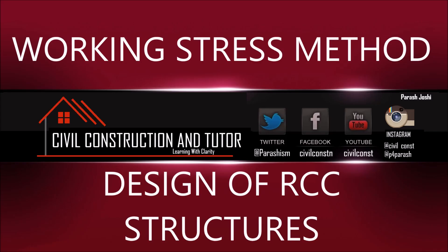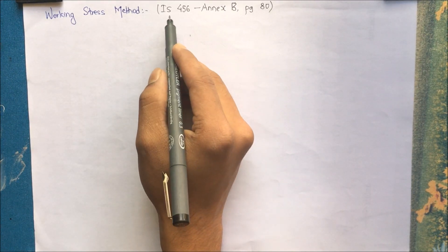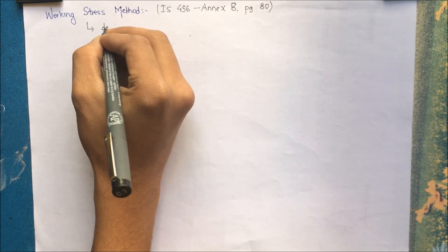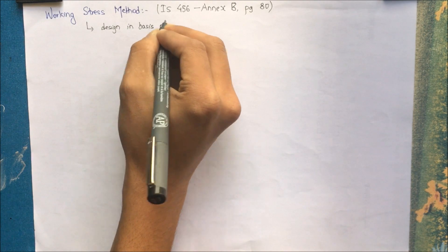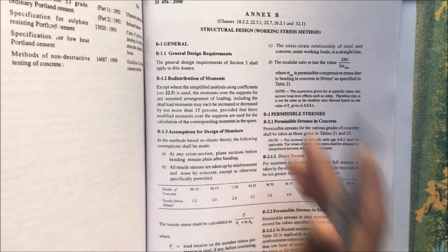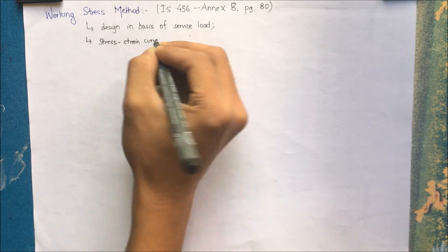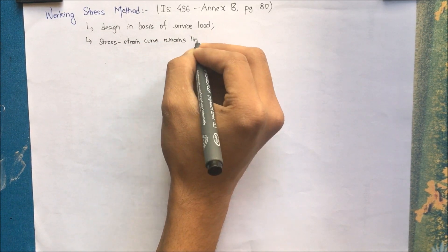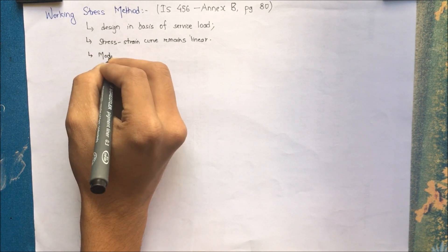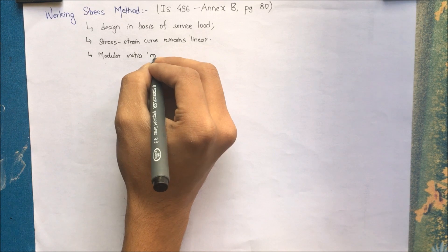Welcome to another video. In this video I'll discuss the Working Stress Method and a numerical from IS 456, page 80. Let us start with some assumptions: the design is based on service load, and the stress-strain curve remains linear. We have a new term in this method, which is the modular ratio M.